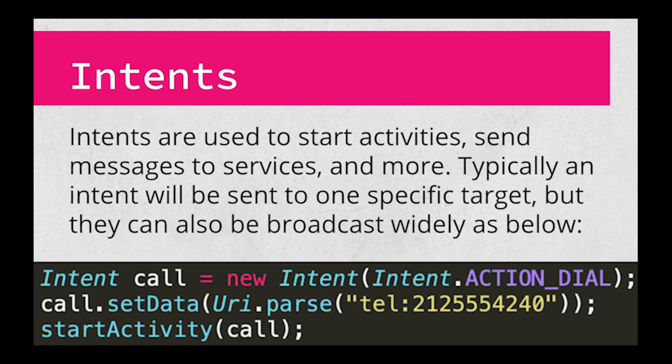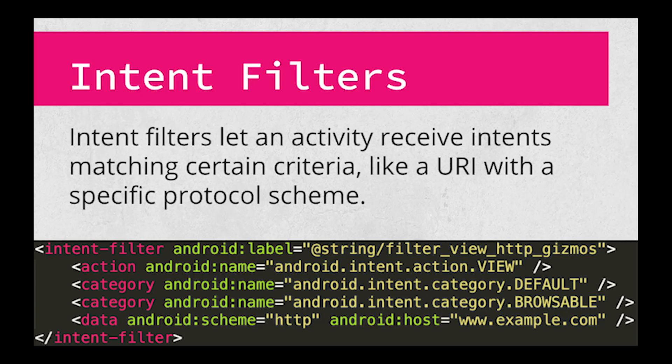Intents are one of the main ways that activities get started. For example, you can set up an intent with a number to call and broadcast it to the system, and it will get picked up by an app that can dial it. They can also be used to talk to background services, among other things. Intent filters can be added to an application's manifest file to allow it to watch for a certain URL or protocol schemes — you can see one of those on the screen right now. If you have ever clicked a link in your browser and seen the 'open with app' dialog pop up, that's because the app registered a relevant intent filter.